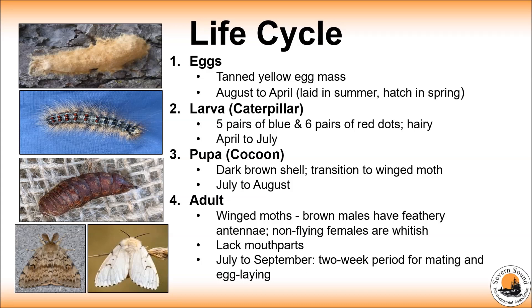From approximately late April until early to mid July is when the gypsy moth is in its caterpillar stage. They hatch quite small and then grow and molt several times to get to be up to six centimeters long and are light grey to black in colour and hairy with five pairs of blue dots and six pairs of red dots.